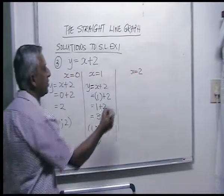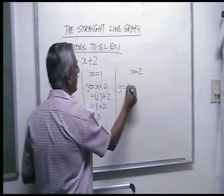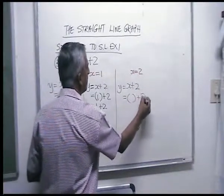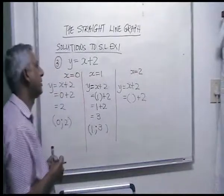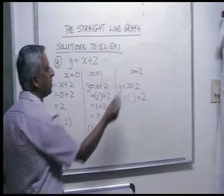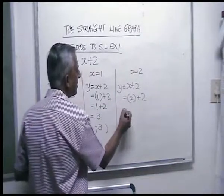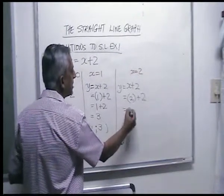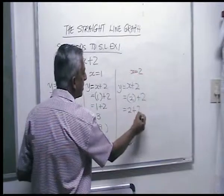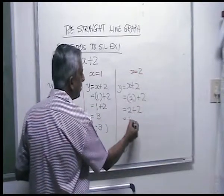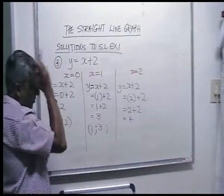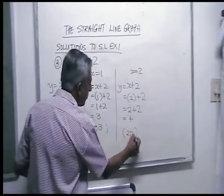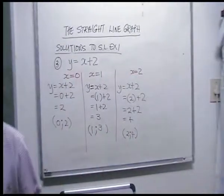For x is two: y is equal to x plus two, so two plus two is four. Your final ordered pair here is two, four. Hope you got all that right.